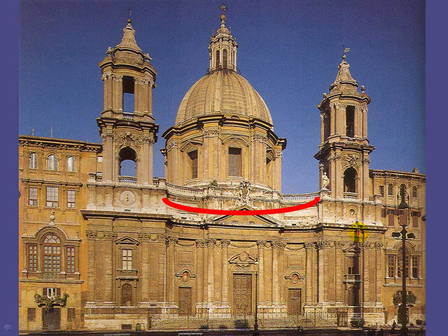Here we have an interesting concave shape to the front of this building. The red line that I've drawn here is just an attempt to accentuate that so you can have a better look at it. This church is farther away at the central door from the front than the sides. It's an unusual shape that adds a kind of motion to the building structure that you wouldn't have if the front surface was flat.